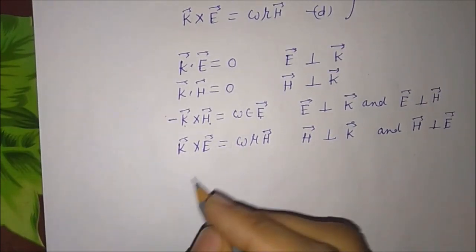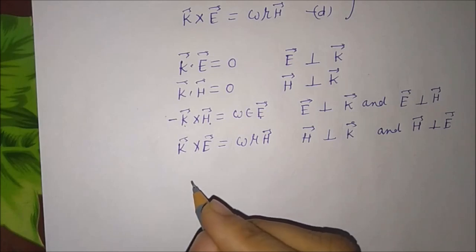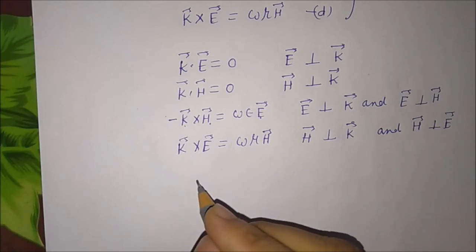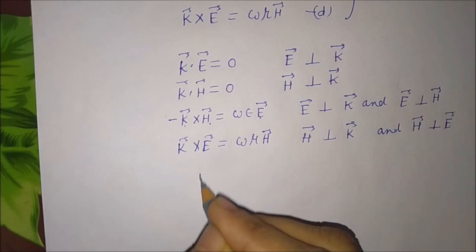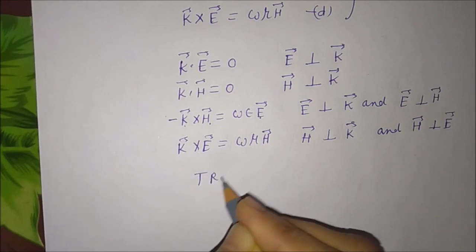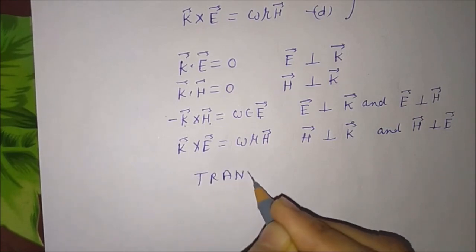So we find that H, k, and E are mutually orthogonal, and E and H are perpendicular to the direction of propagation. That is, the electromagnetic waves in an isotropic dielectric are transverse in nature.